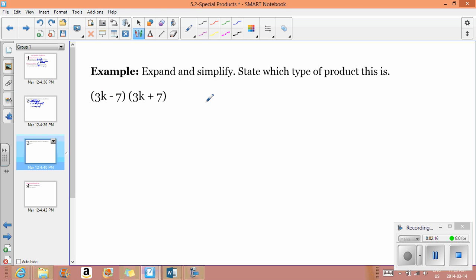The other case here is a difference of squares. So to state what type this is, a difference of squares. I'm going to do this with the box method, so whichever way you'd like, just trying to switch it up. So (3k - 7)(3k + 7).